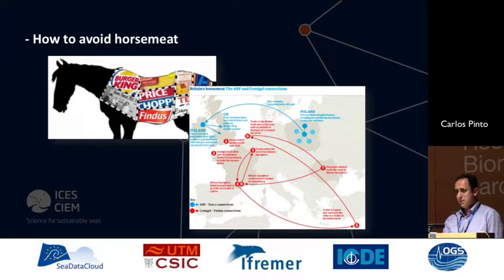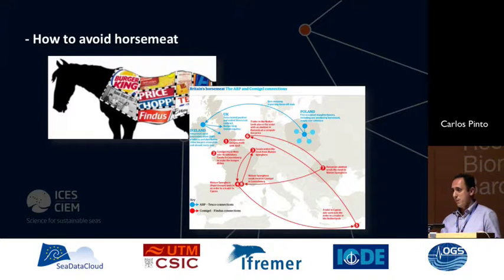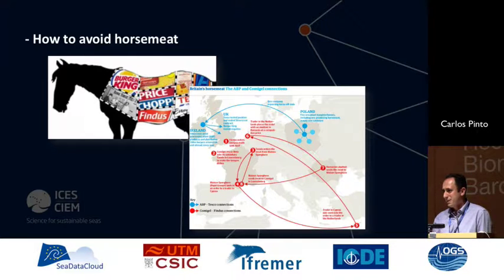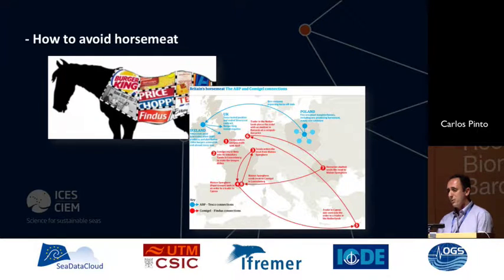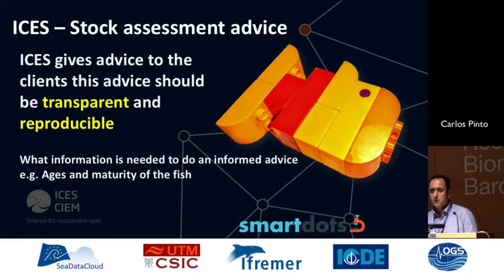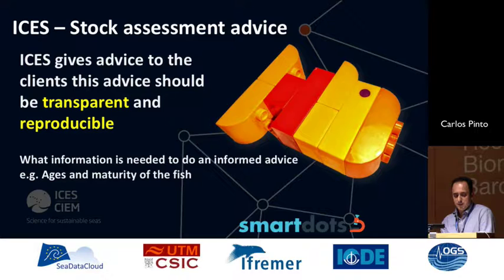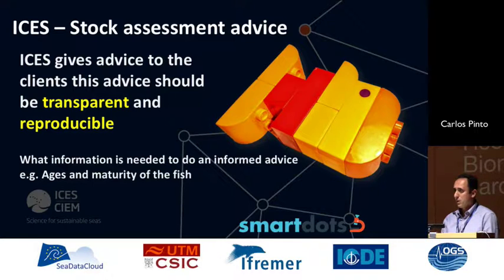Now we are jumping to stock assessment. There was a scandal in the UK where several brands were buying what they thought was cow meat, but someone tested it and discovered it was horse meat. They tried to trace back the sources of that meat and after going through all those schemas and countries, they discovered where the horses were coming from. That's exactly what this software is trying to avoid — you should know where your data is coming from. ICES gives stock assessment advice, and what we are trying to achieve is that that advice is transparent and reproducible.